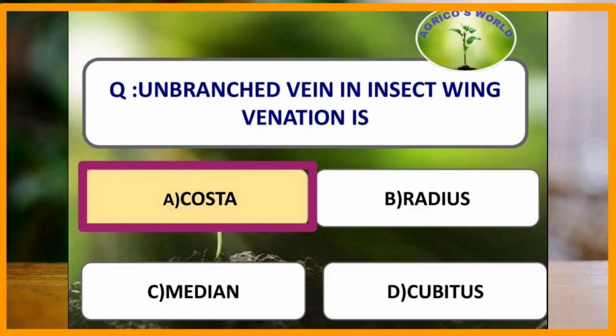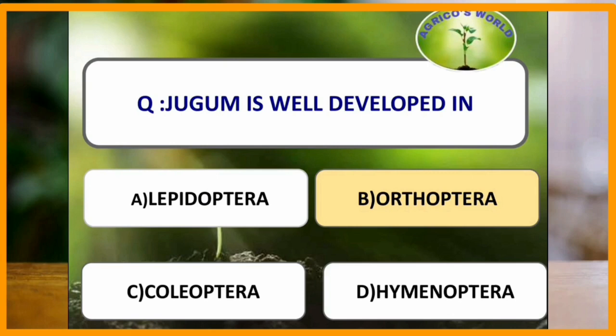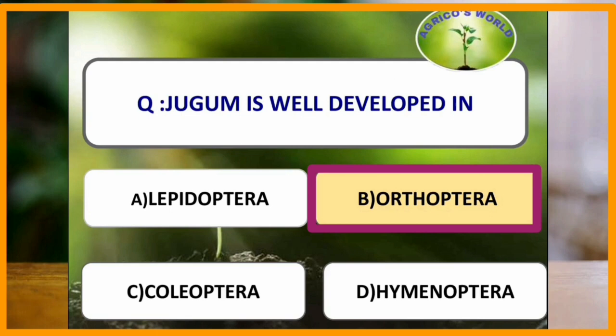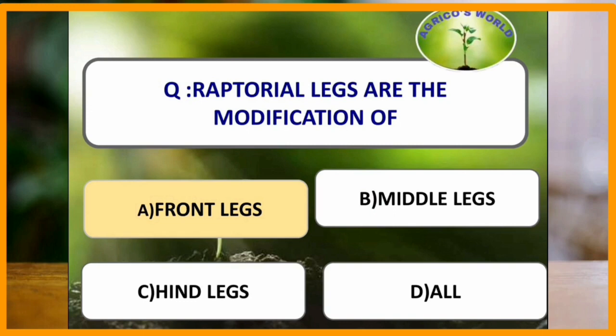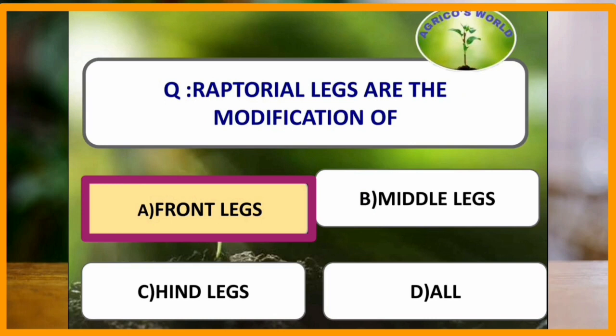Jugum is well developed in which of the following order? Jugum is well developed in the order Lepidoptera. Raptorial legs are the modification of which legs? Raptorial legs are the modification of front legs. The raptorial legs are modified for preying. In raptorial type of legs, the femur is spinous and possesses a central longitudinal groove. The tibia is narrow, blade-like, spinous, and fits into the groove of the femur.